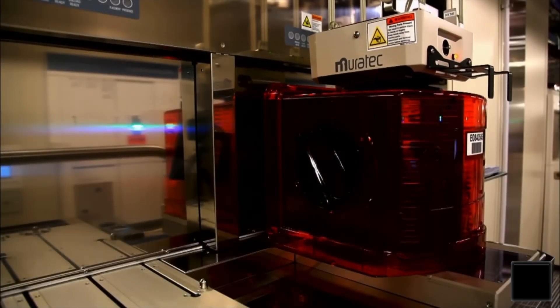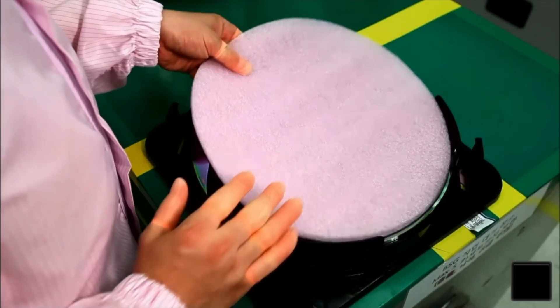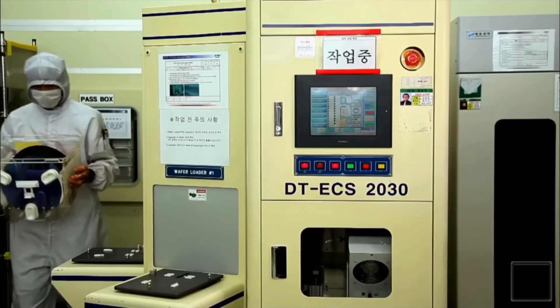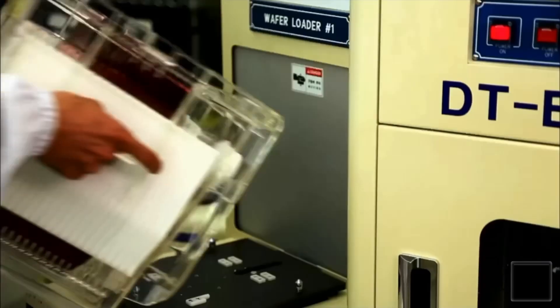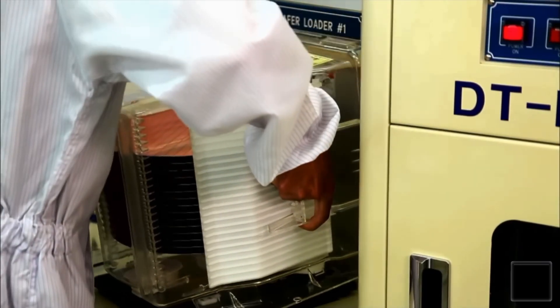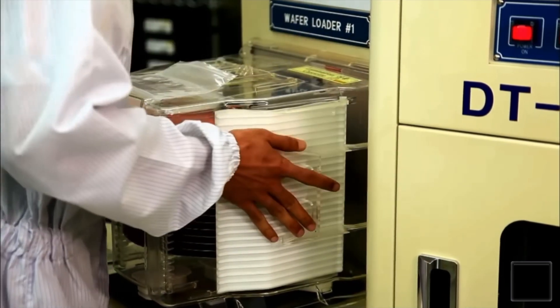A robot tests the circuitry for every memory chip on the wafer. A single wafer, measuring 30 cm in diameter, yields hundreds of memory chips. The goal is to make those chips as small as possible.